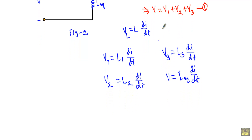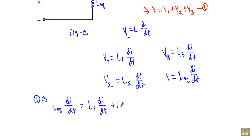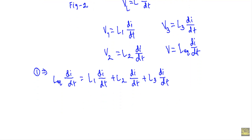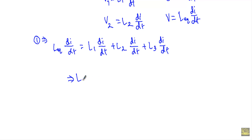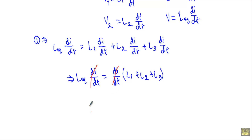Substituting the values of V1, V2, V3 and V into equation 1, we get: L equivalent times dI/dt equals L1·dI/dt plus L2·dI/dt plus L3·dI/dt. On the right side, dI/dt is common, so: L equivalent·dI/dt equals dI/dt times (L1 plus L2 plus L3). Canceling dI/dt from both sides gives L equivalent equals L1 plus L2 plus L3.